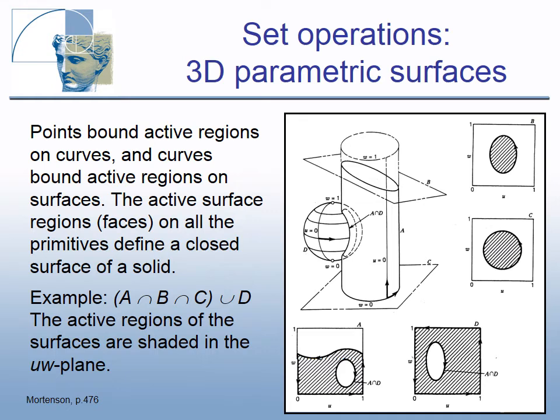Set operations on solids bounded by parametric surfaces bring the algorithm one dimension higher: points bound active regions on curves, and curves bound active regions on surfaces. The active surface regions on all primitives define the closed surface of a solid. In the shown example, solid A is a cylinder, B and C are planar half spaces, and D is a solid ball. The solid is made by intersecting cylinder A with planar half spaces B and C, then making union with ball D: A ∩ B ∩ C ∪ D. The detected active regions of the four surfaces are shaded in the U-W plane.